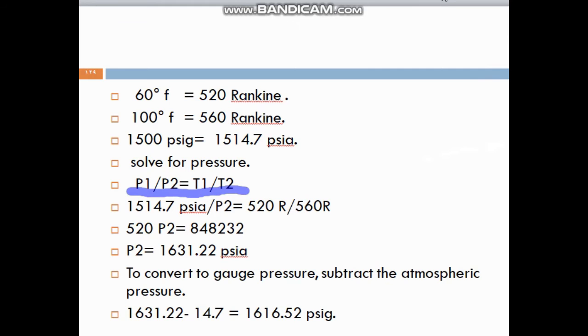If you want here to change the absolute pressure to gauge pressure, what you have to do is take the absolute pressure and subtract the atmospheric pressure, as we see here.